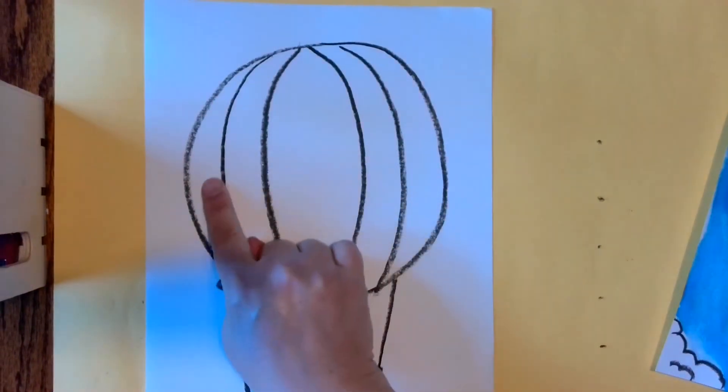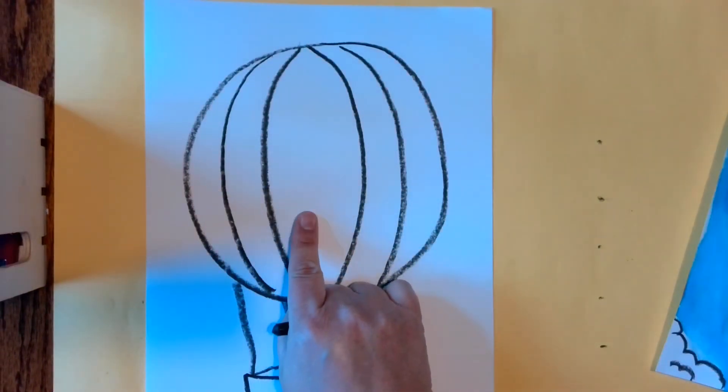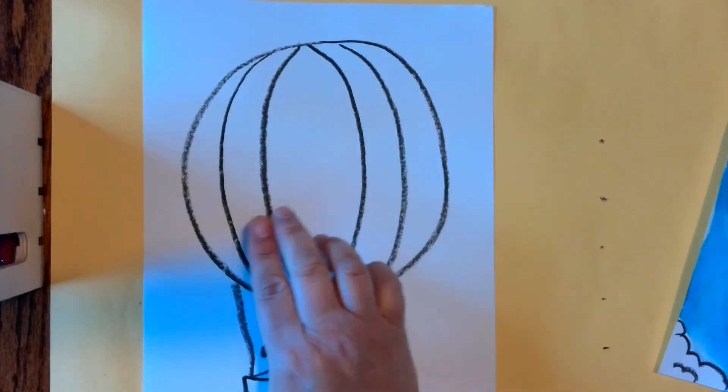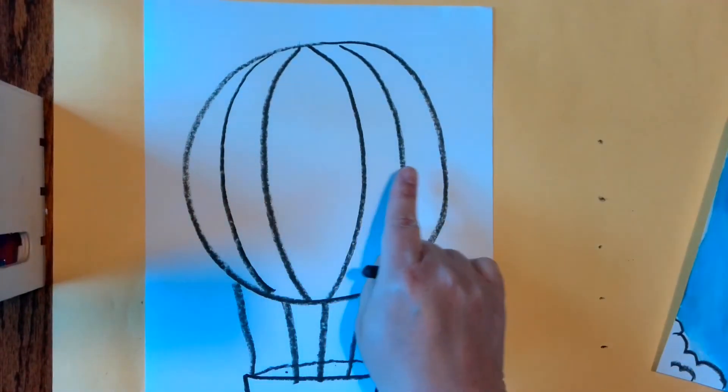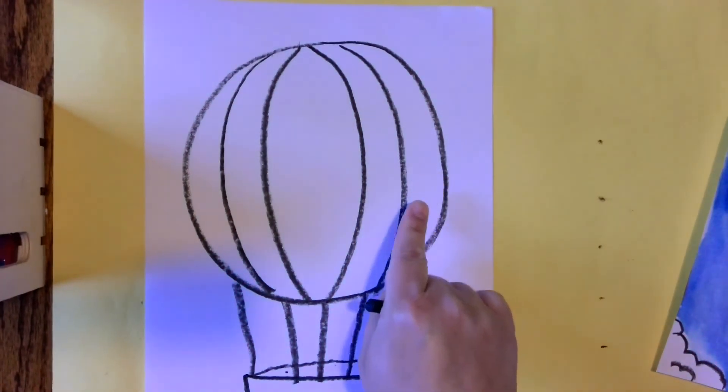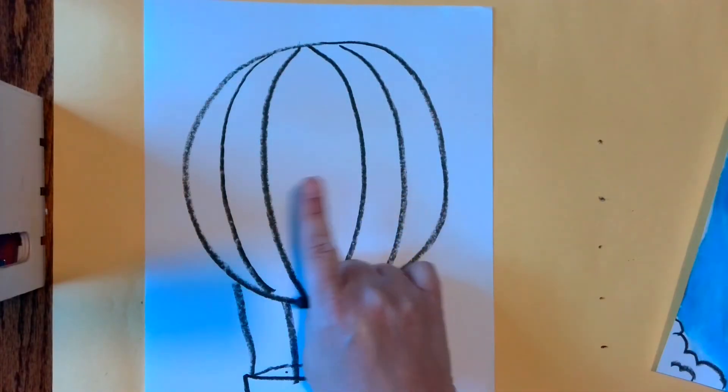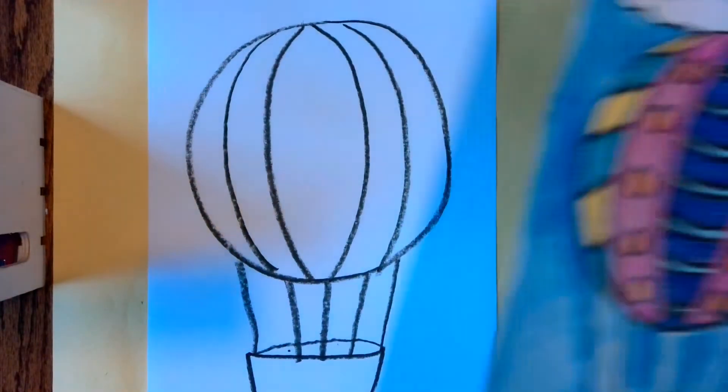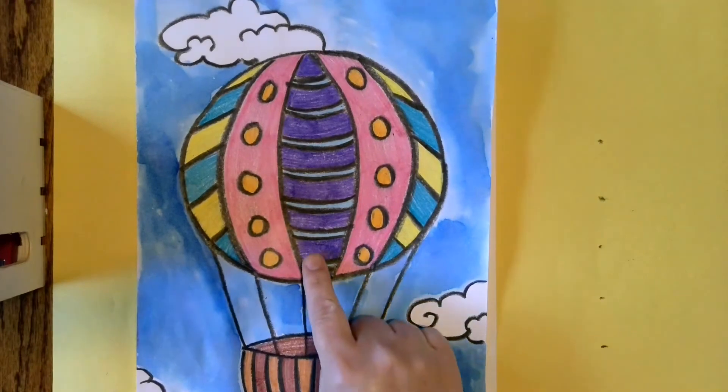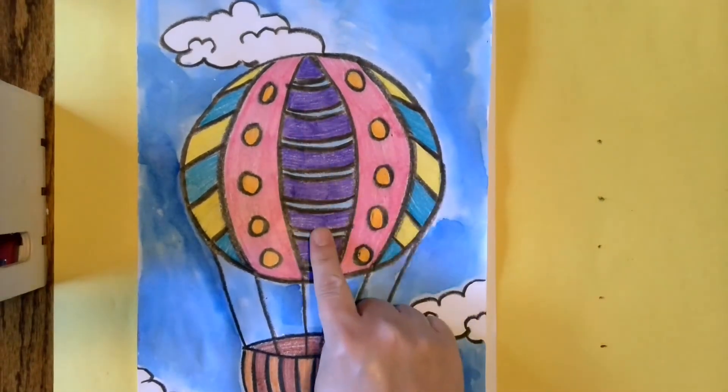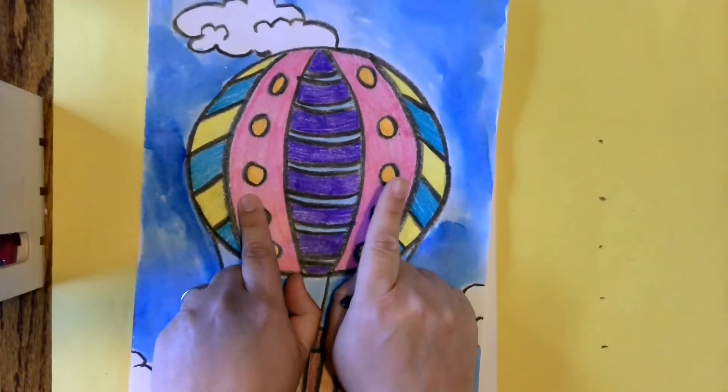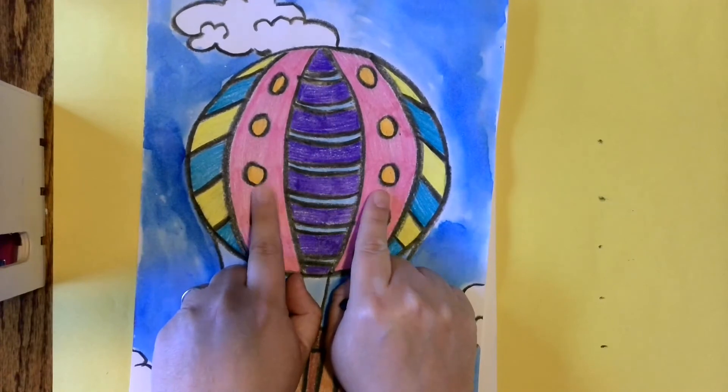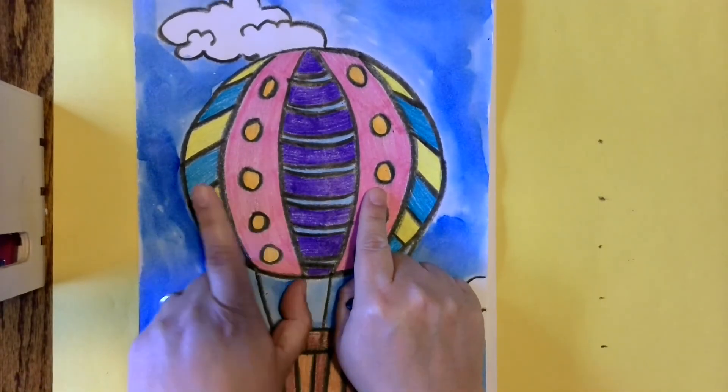Now inside here is where you're going to be adding your patterns. Each section can be different with your designs, or if you want to repeat designs, you can, too. So let me show you on the other one that I had done. The center has a pattern, and then these two are the same, but these two could be different. It's up to you.